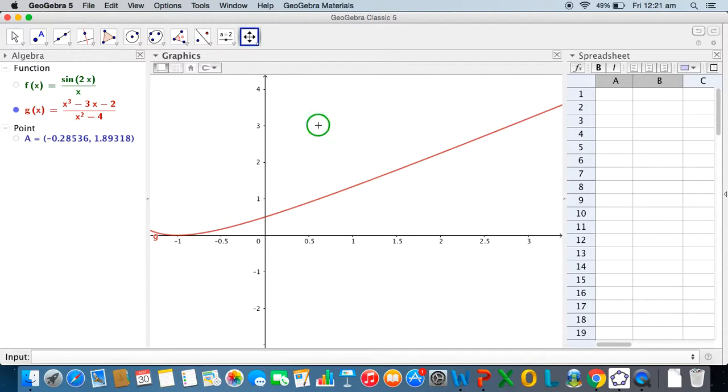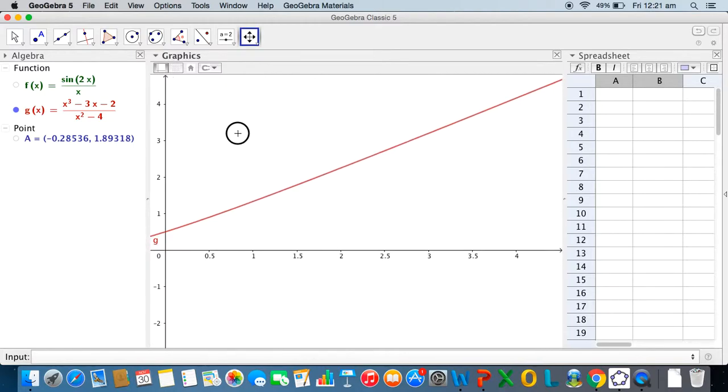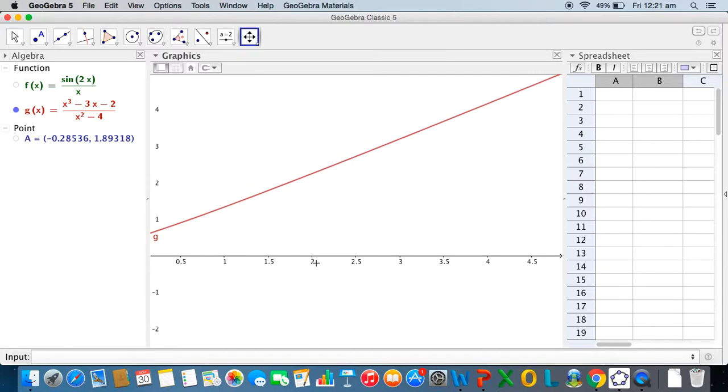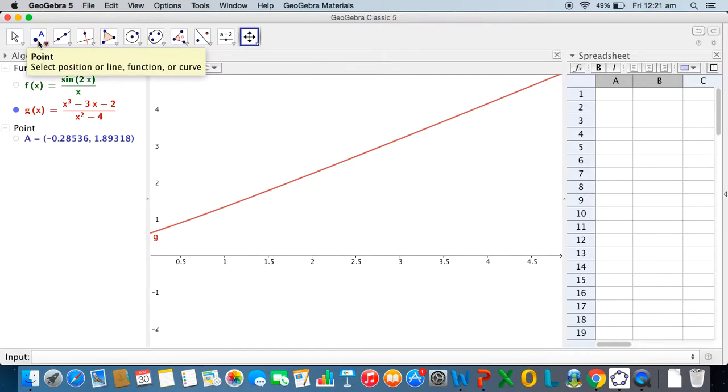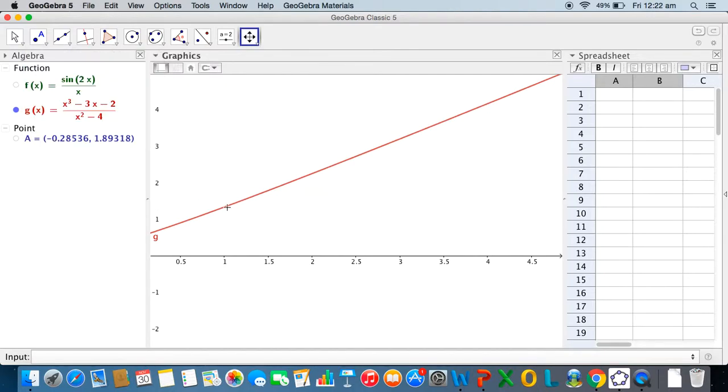I can use the move graphics view to shift the graph a bit and let us see what happens to this function as x approaches 2. So again I select a point on the graph of g. I select the point tool, click somewhere on the graph of g(x), and I get a point B whose coordinates are showing in the algebra view. And as I move this point using the move tool across 2, once again I see that at 2 the function is not defined, but as I approach 2 from either side of 2, the function value seems to be approaching something like 2.15.